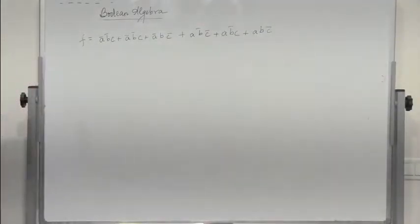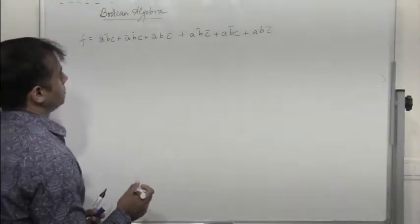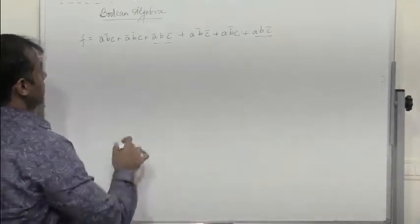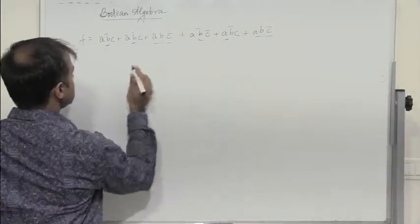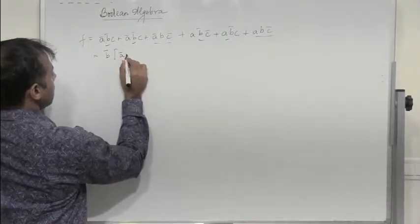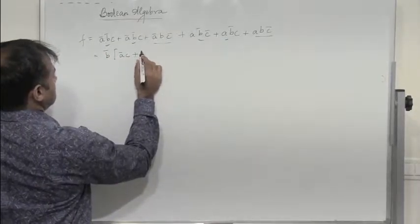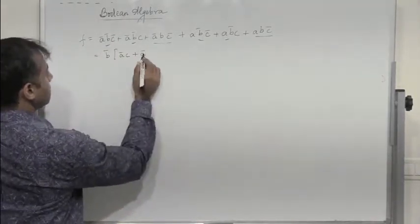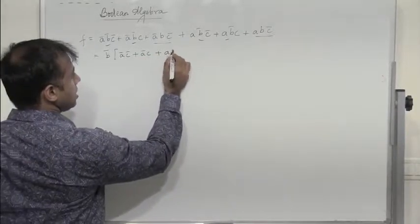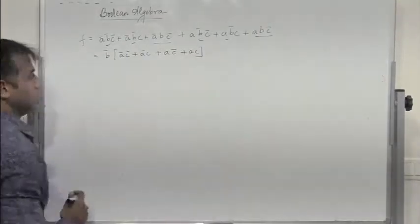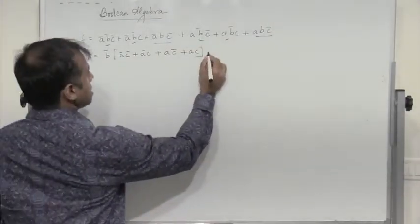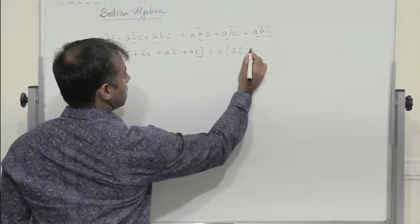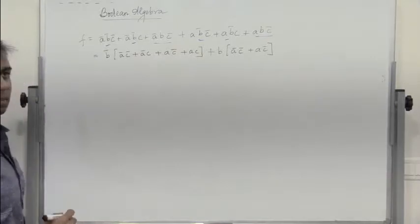Now we need to simplify a given expression. In this expression, if we observe, in two of the terms B is common, and in the remaining four terms B bar is common. Take B bar common from those four: B bar(A bar C plus A C bar plus A C plus A bar C bar). Plus B into (A bar C bar plus A C bar).